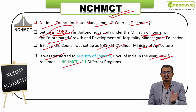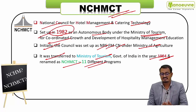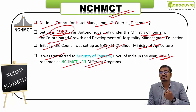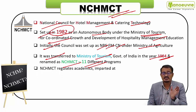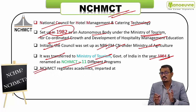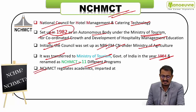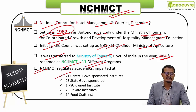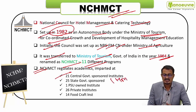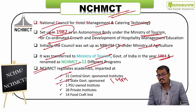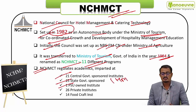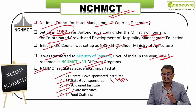It was later transferred to the Ministry of Tourism in 1984 and renamed as NCHMCT. It now offers 11 different programs including diploma, certificate, postgraduate diploma, bachelor's, and master's programs. The NCHMCT regulates academics for hospitality education across 21 central government-sponsored IHMs, 25 state government-sponsored IHMs, one PSU institute, 26 private institutes, and 14 food craft institutes.